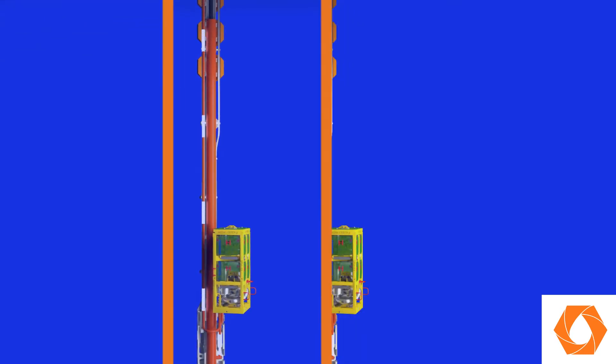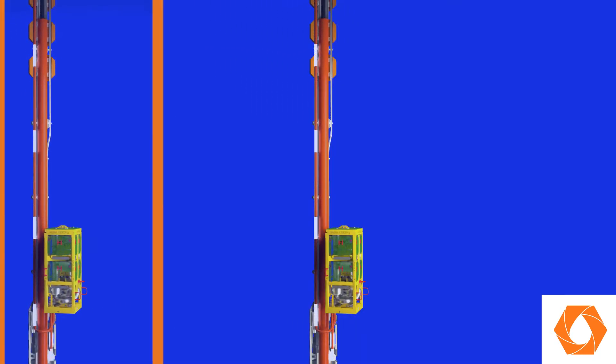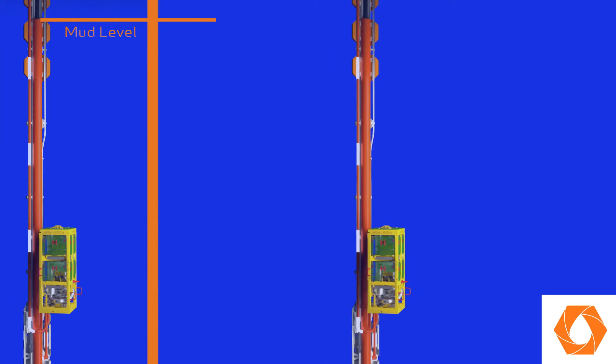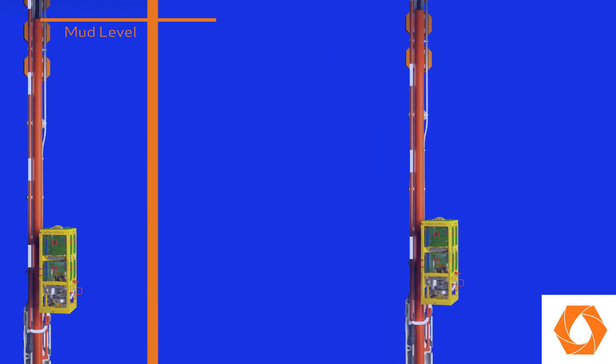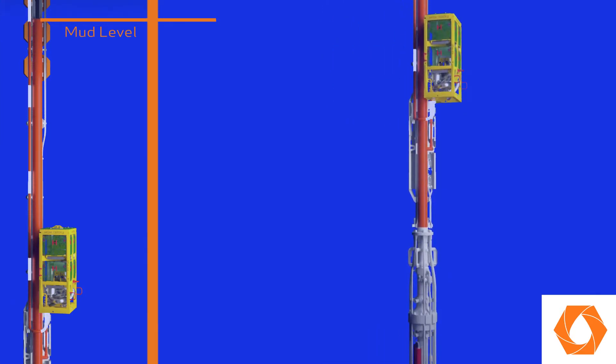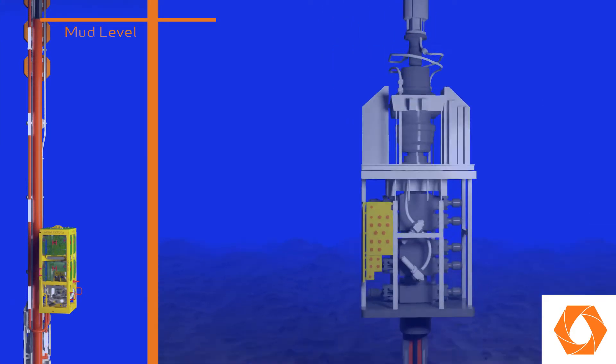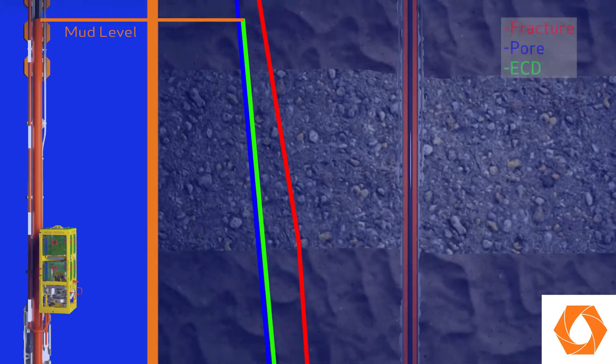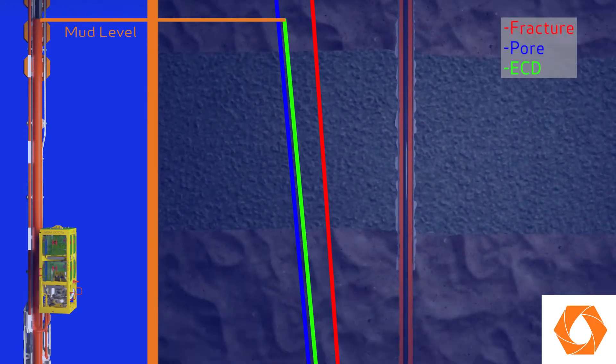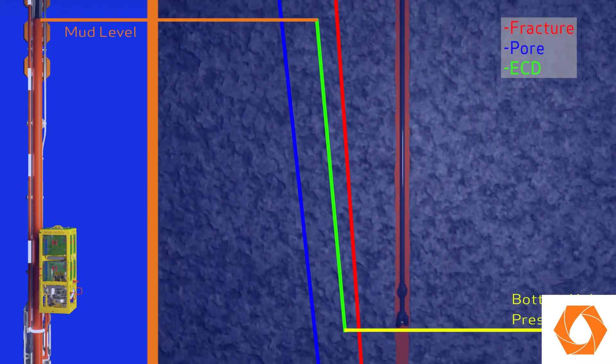This animation showcases how EZDrill controls bottom hole pressure and compensates for ECD, enabling drilling of the undrillable well.